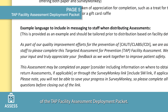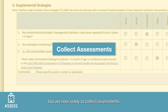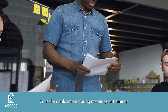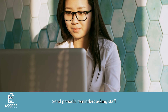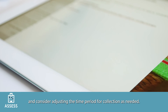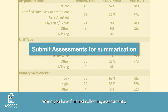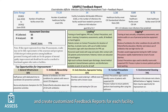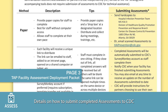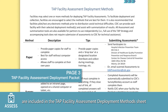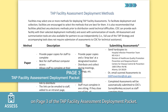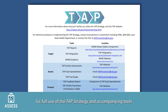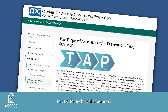Example language is provided on page 5 of the TAP Facility Assessment Deployment Packet. Distribute assessments using the methods selected and work with leadership and champions to encourage collection. Consider deployment during meetings or trainings to increase participation, and send periodic reminders asking staff to complete assessments. When you have finished collecting assessments, CDC is available to summarize them and create customized feedback reports for each facility. Details on how to submit completed assessments to CDC are included in the TAP Facility Assessment Deployment Method Sheet on page 3. All assessment and summarization tools are also available for partners to use independently, so full use of the TAP strategy does not require submission to CDC.